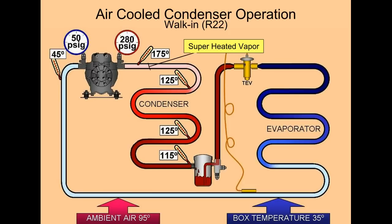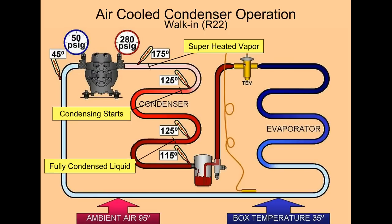So we leave the compressor with superheated vapor, and it gets de-superheated. Once it starts to condense at the beginning of the coil, it's mostly vapor, starting to condense down into liquid. As it moves through the coil, it condenses more and more until we have fully condensed liquid, still at 125 degrees. Sub-cooling begins, removing sensible heat, and the sub-cooled liquid as it enters the receiver is 115 degrees. That makes sure that we have a solid column of liquid hitting our metering device on the evaporator.